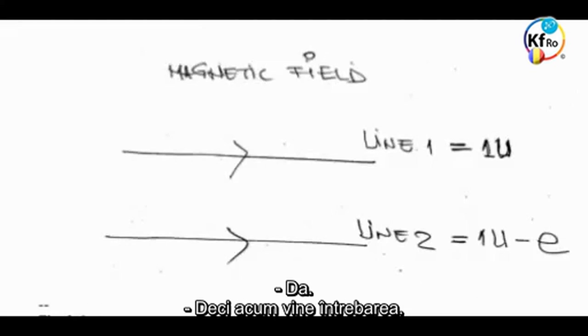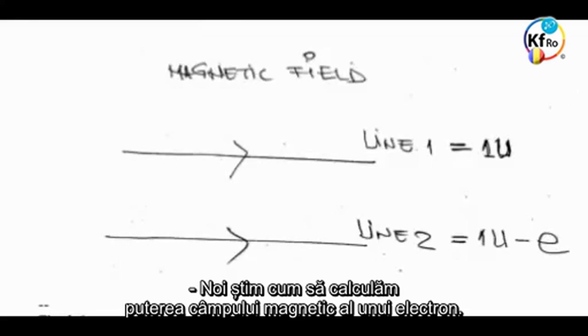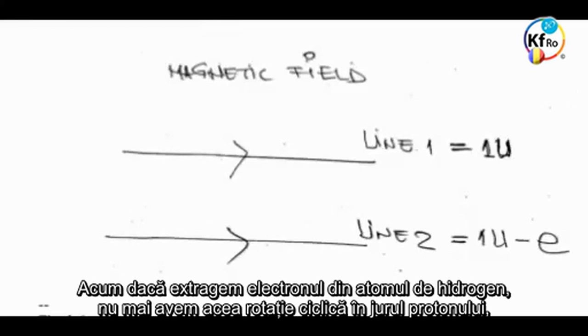Now comes the question: in the hydrogen atom, we know how to calculate the magnetic field strength of one electron.